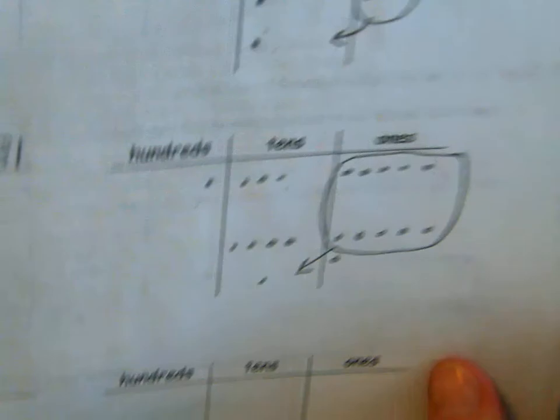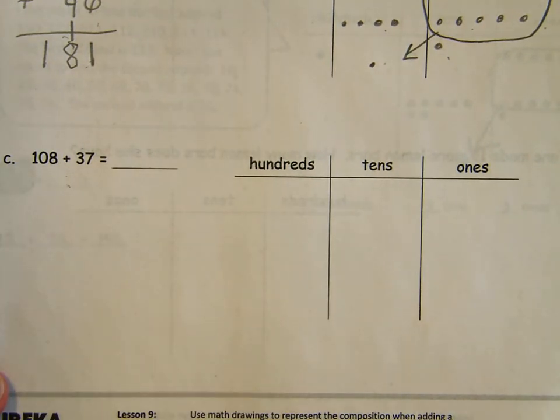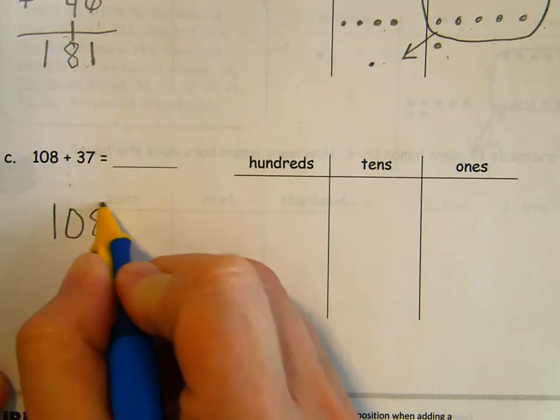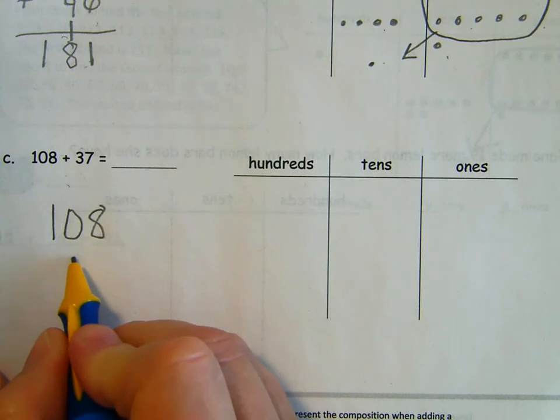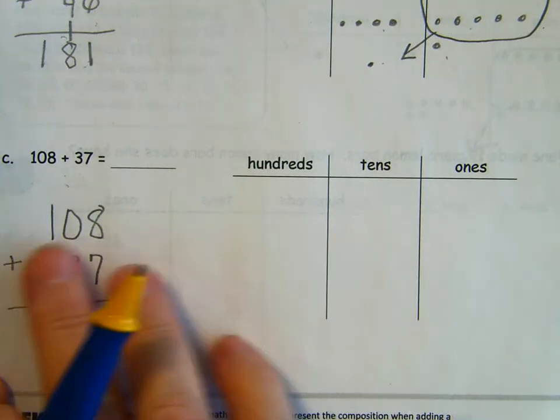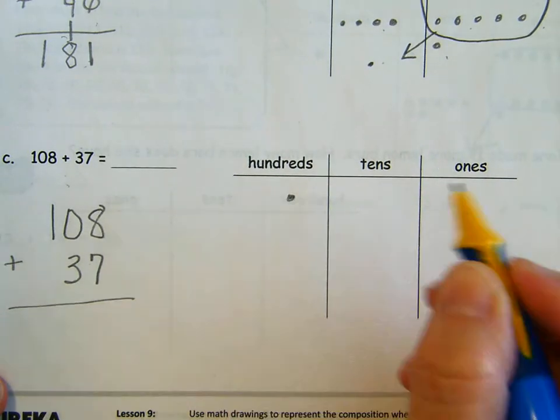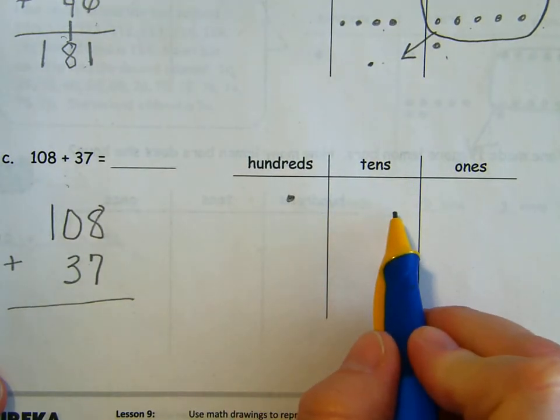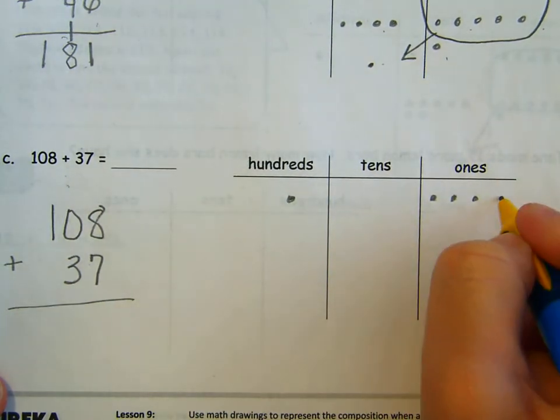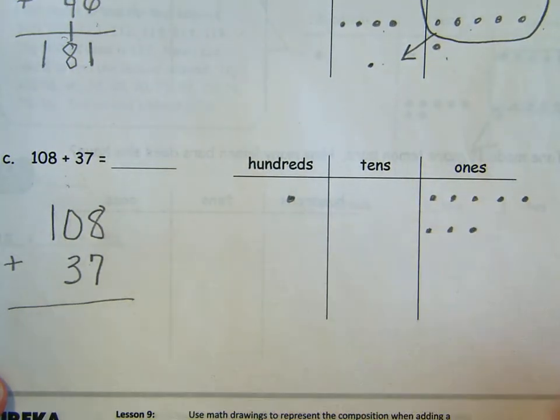One more on this page. 108 plus 37. Starting with our vertical form, 100, zero tens, eight ones, 37, three tens, seven ones. And I need to represent my numbers with chips and the place value. So I have 100, zero tens. And then I have eight ones. So counting 100, 101, 102, 103, 104, 105, 106, 107, 108.